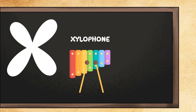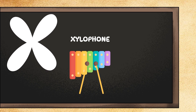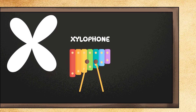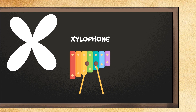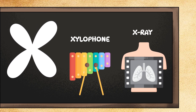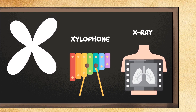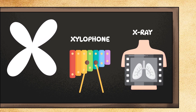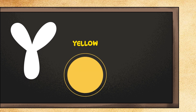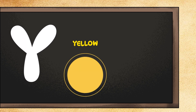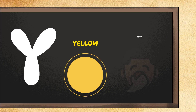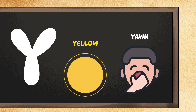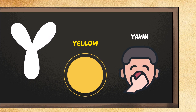X is for xylophone. Can you pretend to play a xylophone in the air? Ding dong! X is also for x-ray. Can you make an X shape with your arms? X marks the spot. Y is for yellow. Can you show me something yellow in the room? Great! Y is also for yawn. Can you pretend to yawn and stretch? Ah!